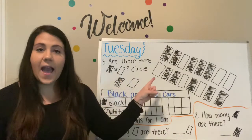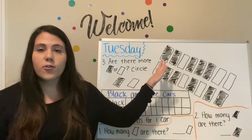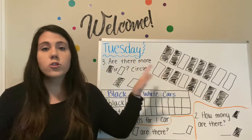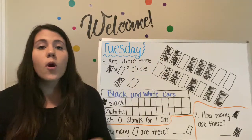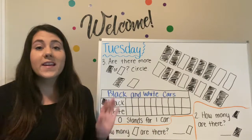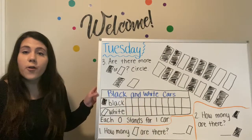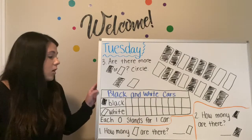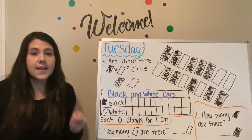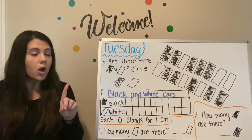On our piece of paper right now we have cars. I colored the black cars in with black marker and the white cars are just left blank. They want to know: are there more black cars or more white cars? So we're going to complete this picture graph to find out. Our topic is black and white cars, and we are going to use a circle to stand for one car — so one circle represents one car.